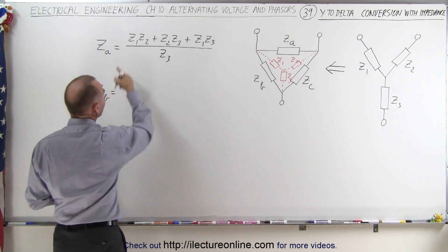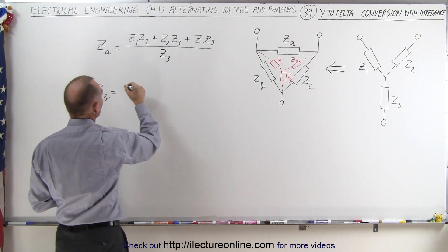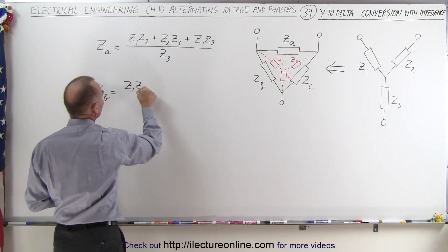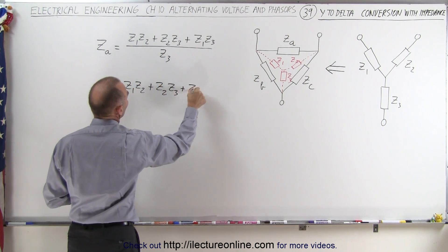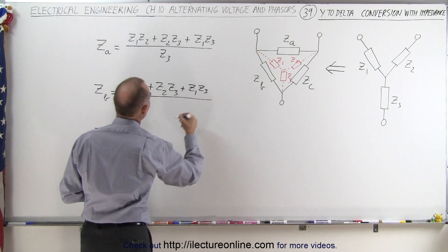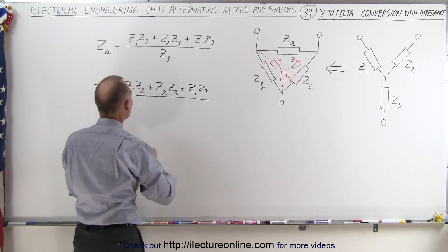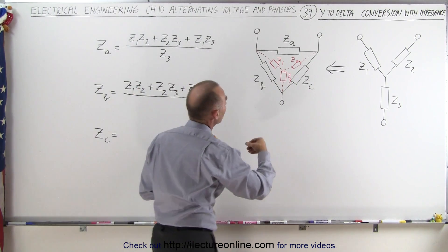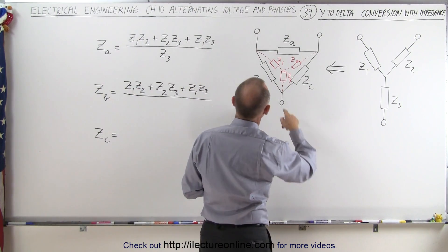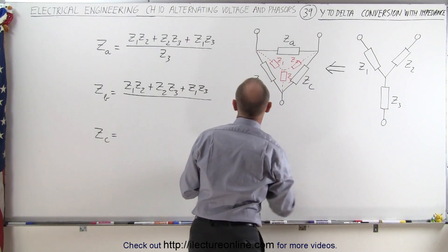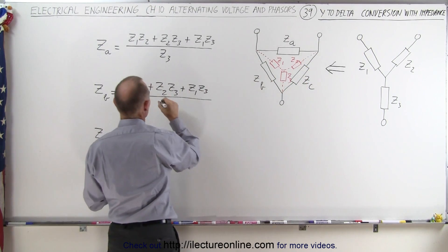ZB can be found by taking the same numerator — Z1 times Z2 plus Z2 times Z3 plus Z1 times Z3 — and we divide the whole thing by the impedance directly across from ZB. So with ZB, the one directly across is Z2.